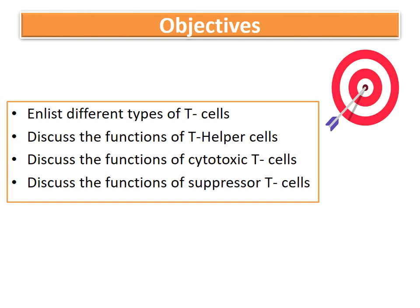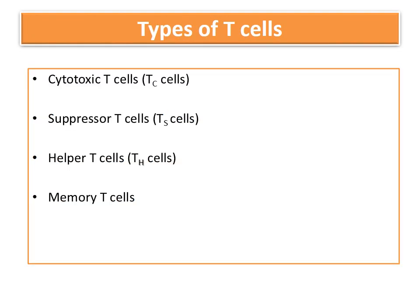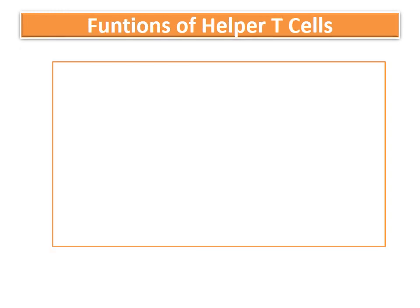As we have discussed, after activation and differentiation the CD8 positive cells differentiate into cytotoxic T cells and suppressor T cells, while CD4 positive cells differentiate into helper T cells and delayed hypersensitivity T cells, along with the formation of some memory cells that remain dormant but will be activated on subsequent exposure to the same antigen. Now we come to the first type of T cell function, that is the helper T cell functions.